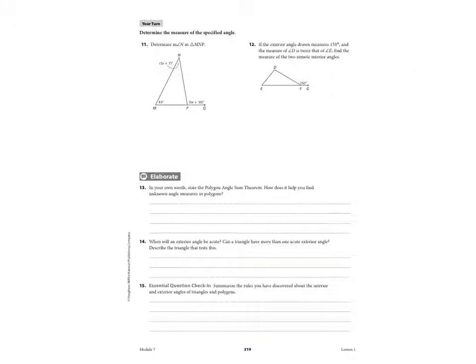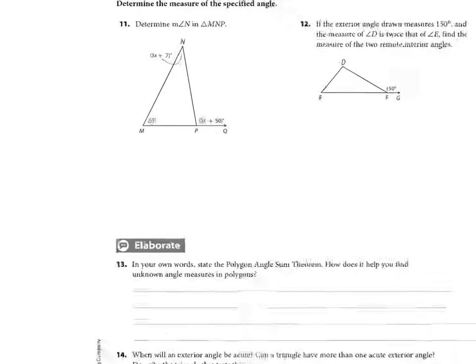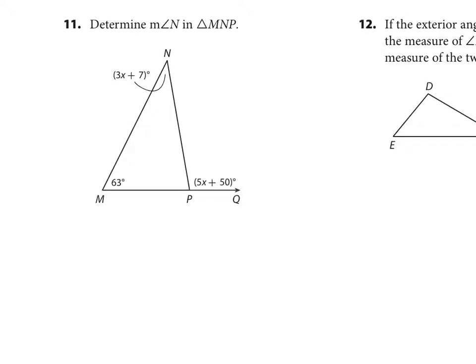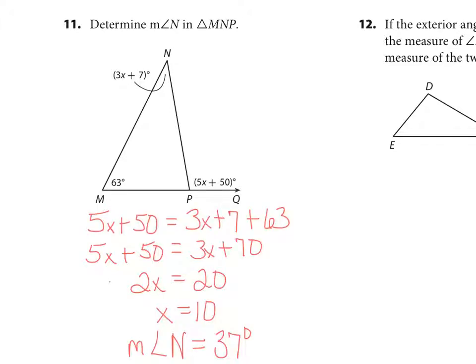So turn the page to 319, and I want you to try 11, and then come back and see if you did it right. Okay, so if you did this right, you'll get x equals 10, and the measure of angle n would be 37 degrees. And that is it for your video tonight. I will see you tomorrow.